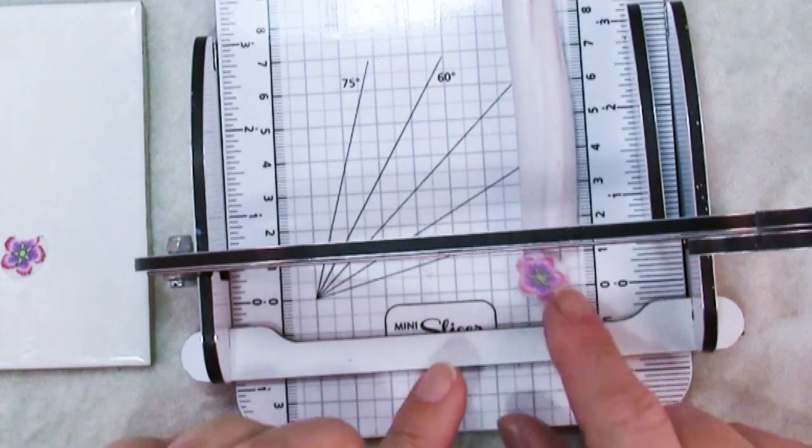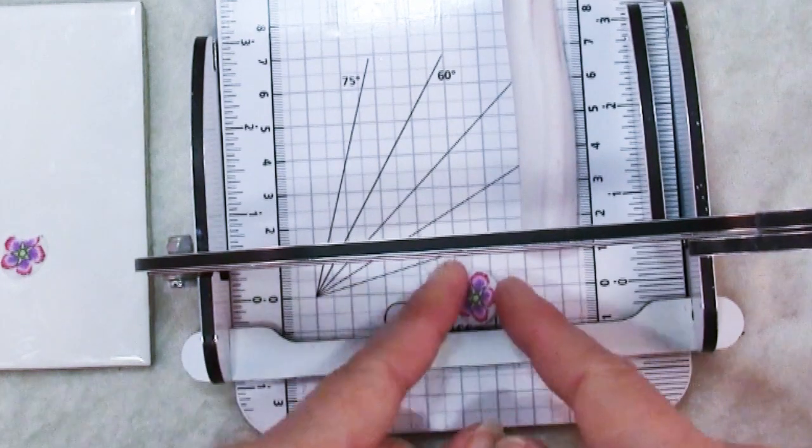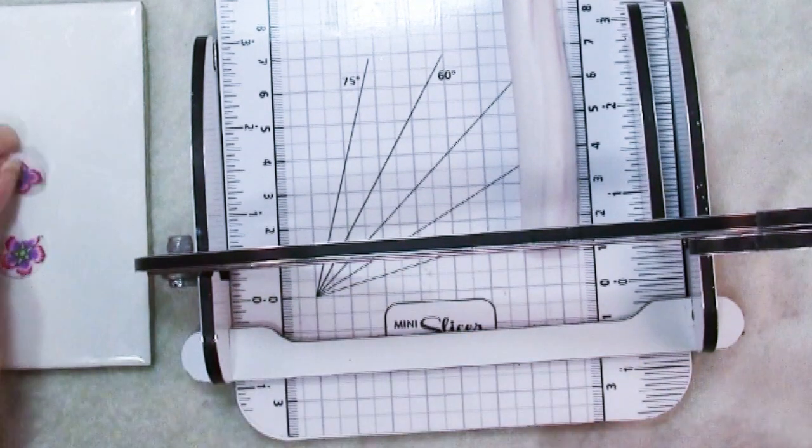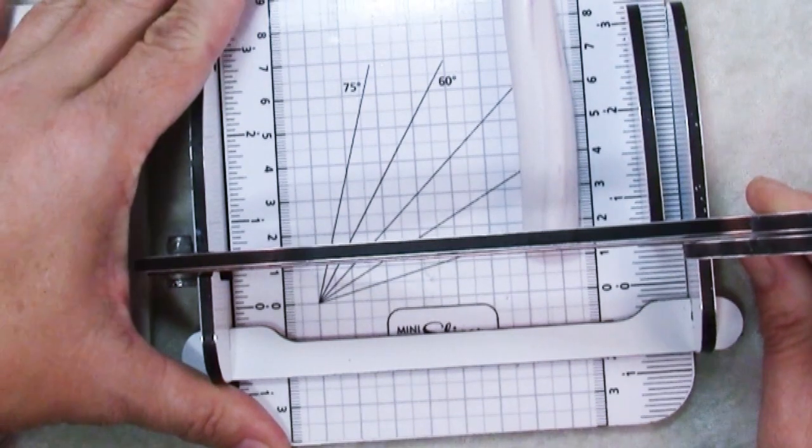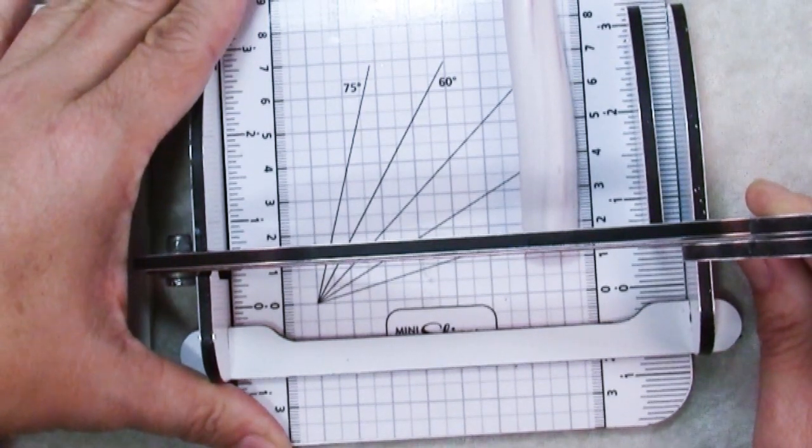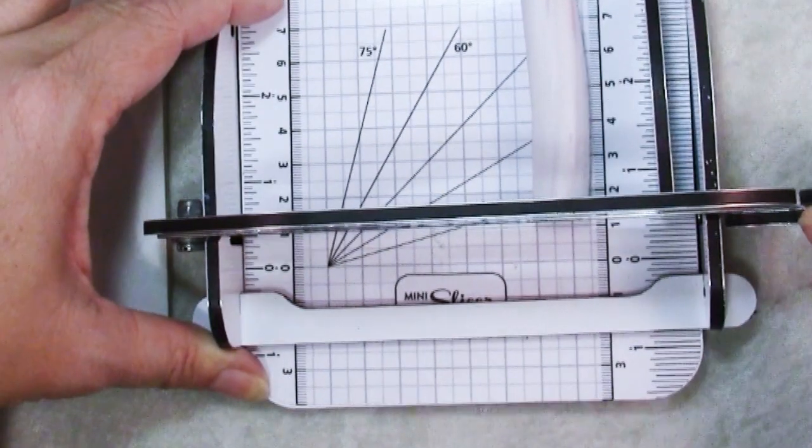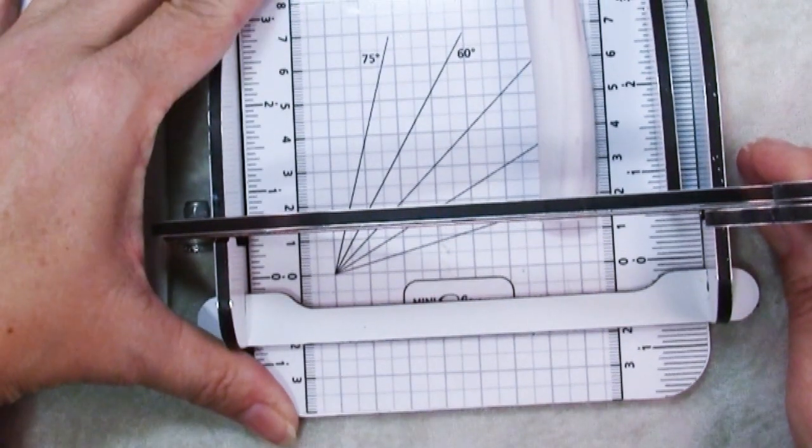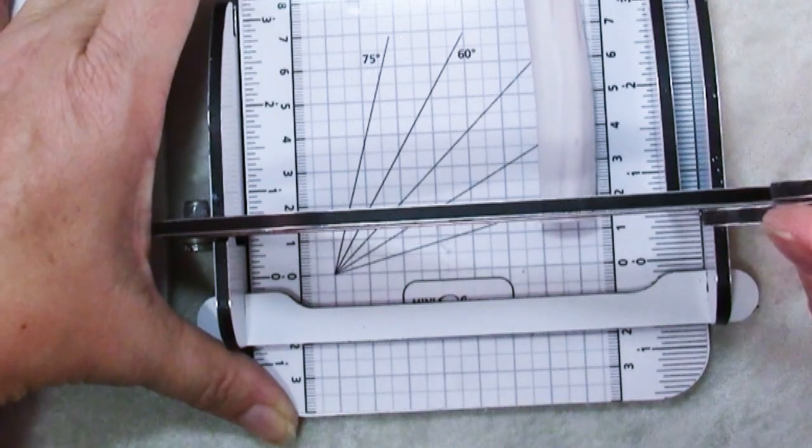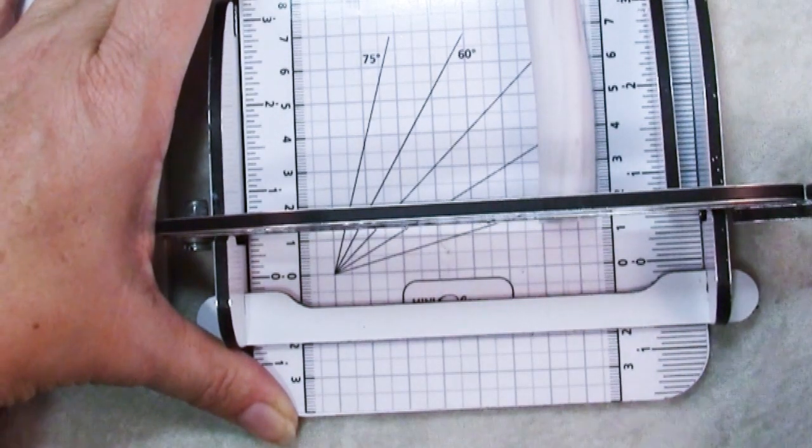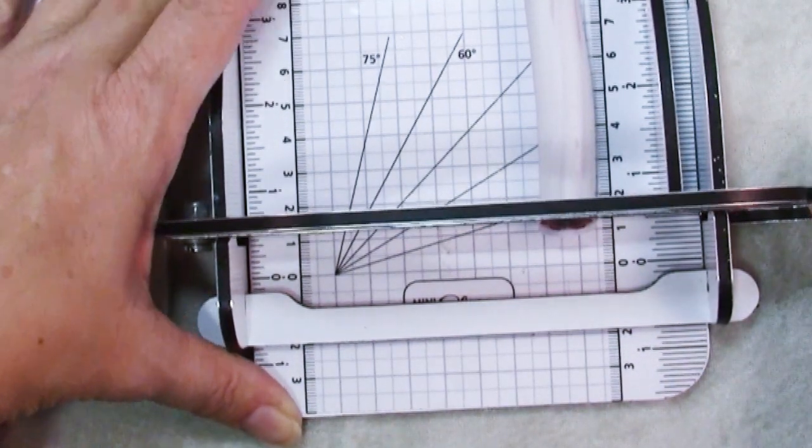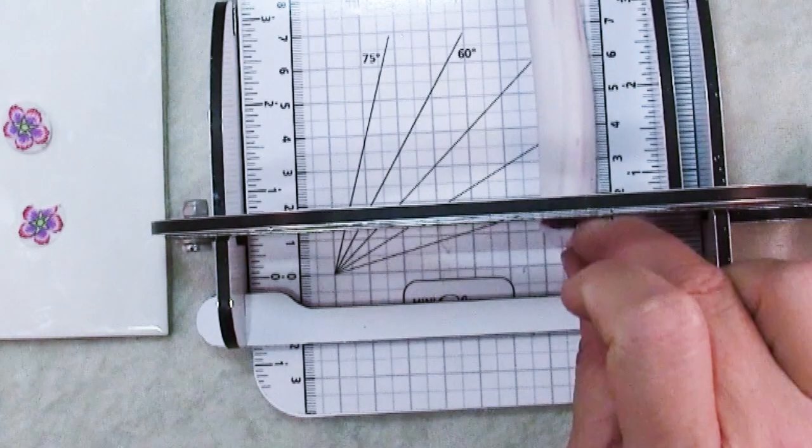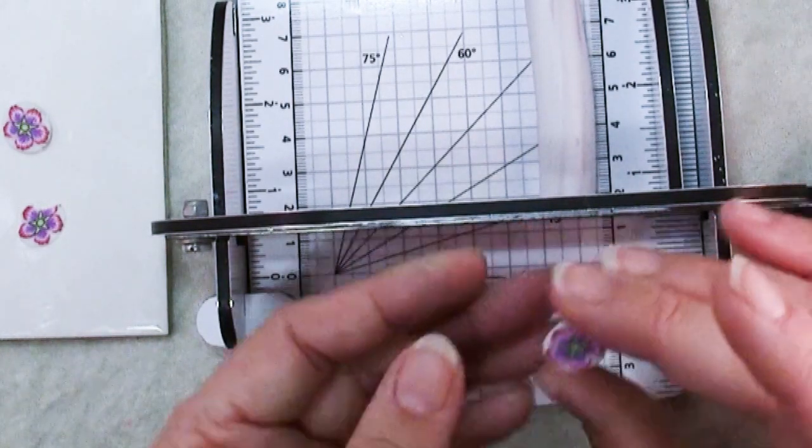Now that is a pretty thick slice, but what's nice is that you can get them very consistent. So let's try again. I think something moved because that's thicker than I was expecting it to be. Okay. There we go. There we go. That's a nice slice.